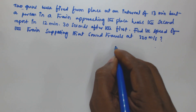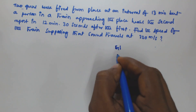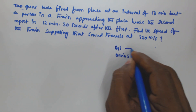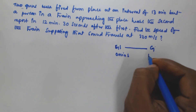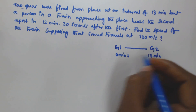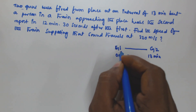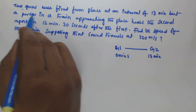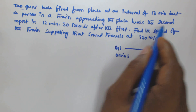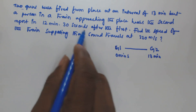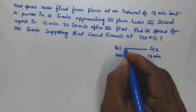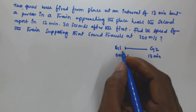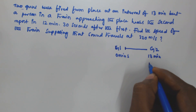It is given that two guns were fired from the same place at an interval of 13 minutes. So if the first gun is fired at 0 minutes, then the second gun is fired at 13 minutes. The time gap between the first gun fired and the second gun fired is 13 minutes. A person in a train approaching the place hears the second report in 12 minutes 30 seconds.